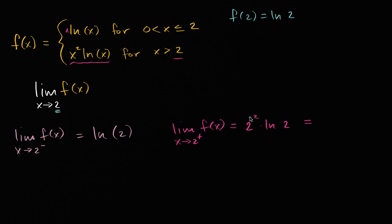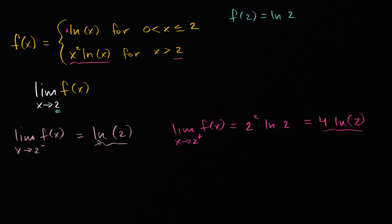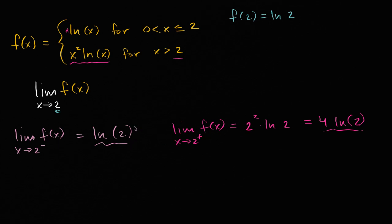So this is equal to four times the natural log of two. The right-hand limit exists and the left-hand limit exists, but these are two different values — we approach a different value from the left than from the right. If you were to graph this, you would see a jump discontinuity. This limit does not exist because the left-hand limit and the right-hand limit go to two different values.